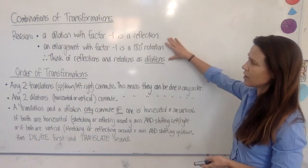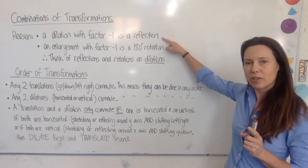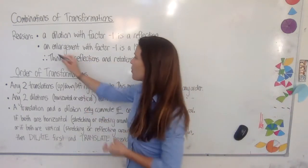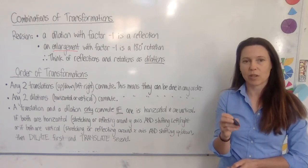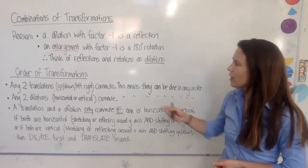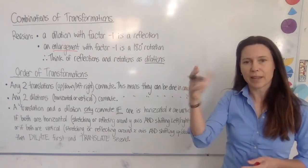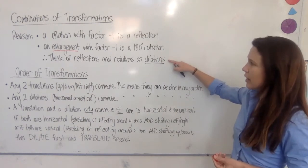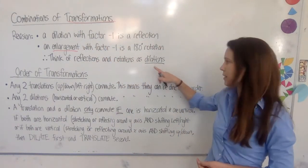A little bit of revision from yesterday — don't write this down, just keep it in mind. A dilation with a factor of negative 1 is actually a reflection, and you can do that in both directions. An enlargement mathematically means we're performing a dilation in both directions with the same factor — it can be an enlargement or a reduction and still be termed an enlargement. If it has a factor of minus 1, it flips it around both the x-axis and y-axis, which performs a 180 degree rotation.